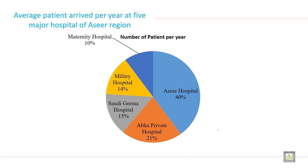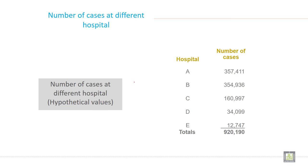This is an example of a pie chart drawn from the previous slide data — average patients arrived per year at five major hospitals of Asir region. You can see: Asir hospital 40%, Abha private hospital 21%, Saudi German hospital 15%, and military hospital 14%.